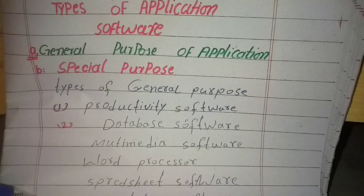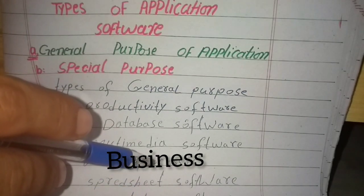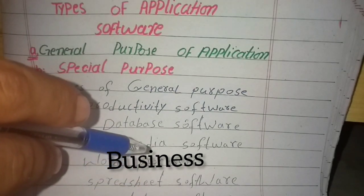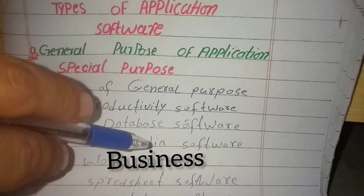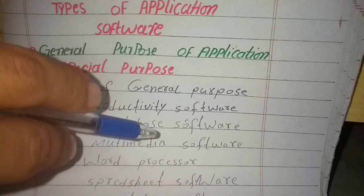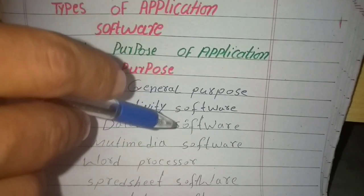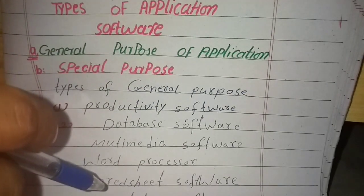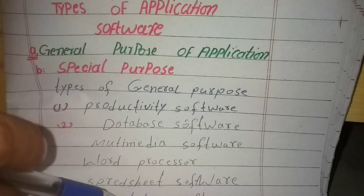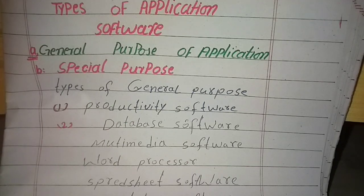Types of business software: business software increases business productivity and is called business software. The term covers a large variation of users within the business environment and can be categorized by small, medium, and large scale. Common types of business software include control systems, inventory, and accounting software.